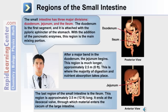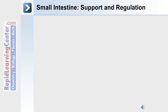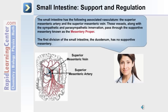Shown in the diagram on the left is the superior mesenteric vein and the superior mesenteric artery, which are the major blood supply to this region of the digestive system. The small intestine has associated vasculature consisting of the superior mesenteric artery and vein. These vessels, along with sympathetic and parasympathetic innervation, pass through the supportive structure known as the mesentery proper.